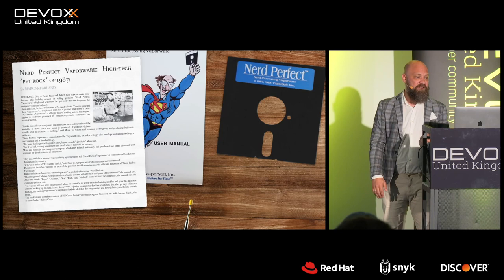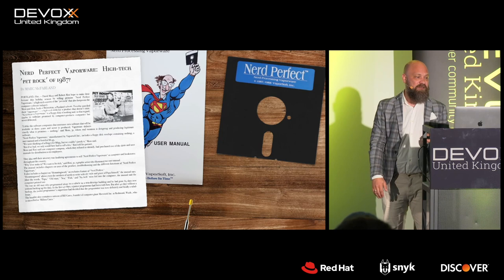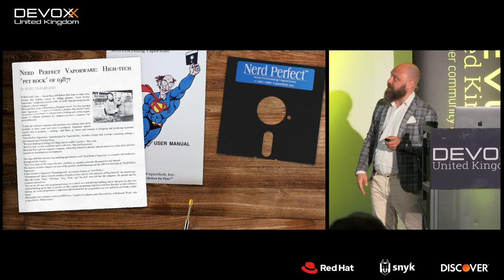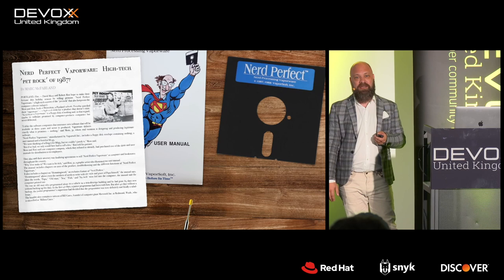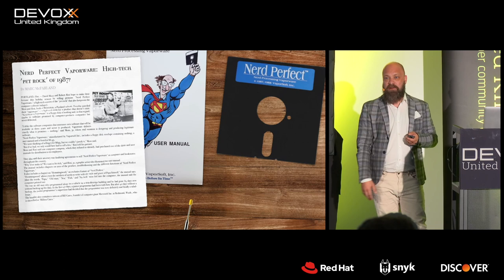An article from a local newspaper in Portland, where VaporSoft was from, says it perfectly: 'The high-tech pet rock of 1987.' The pet rock was something sold in the 1960s on mail order in the United States — an actual stone — and the person who sold it made millions.